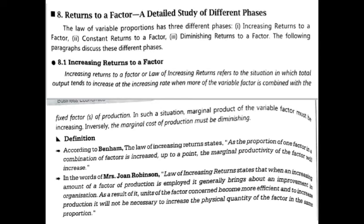First we discuss increasing return to a factor. Increasing return to a factor refers to the situation in which total output tends to increase at an increasing rate when more of the variable factor is combined with the fixed factor. That means when the quantity of variable factors is increased along with the fixed factor, total output increases at an increasing rate — this is called increasing return to a factor.